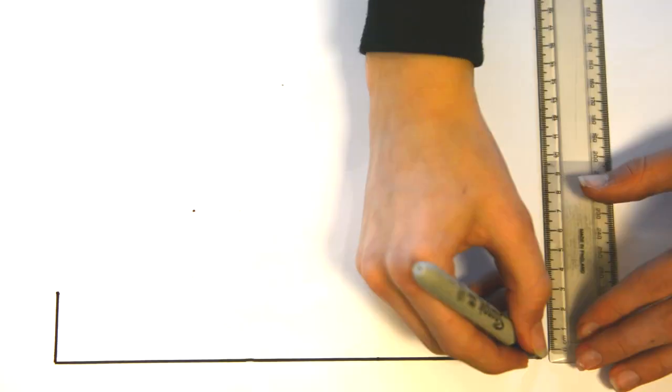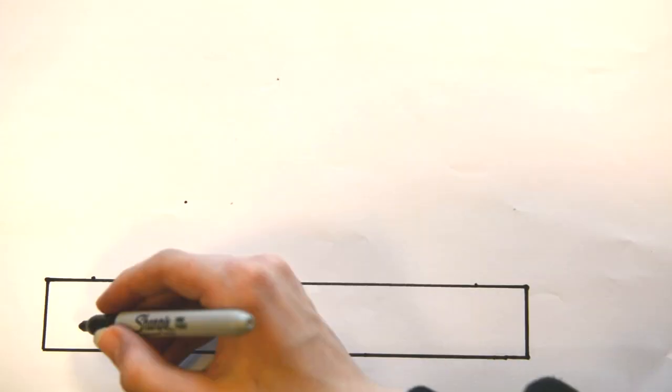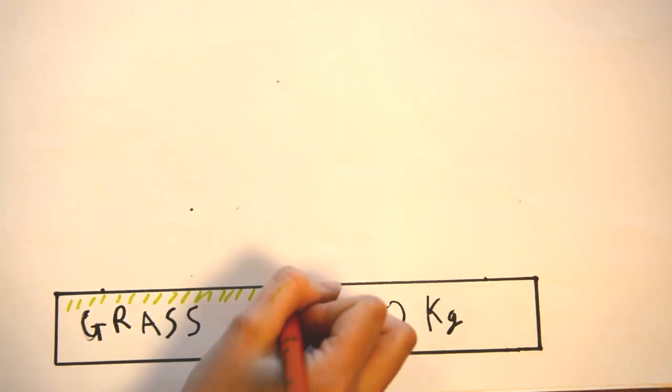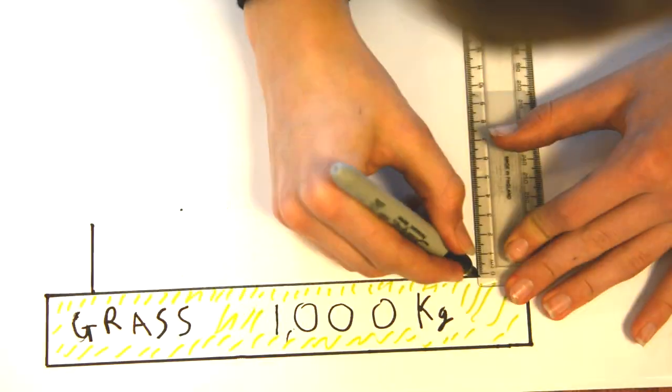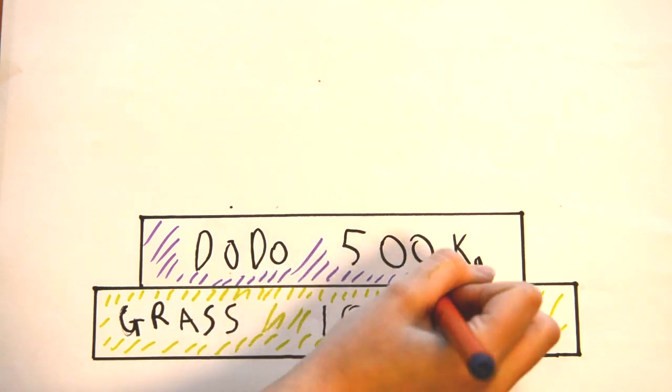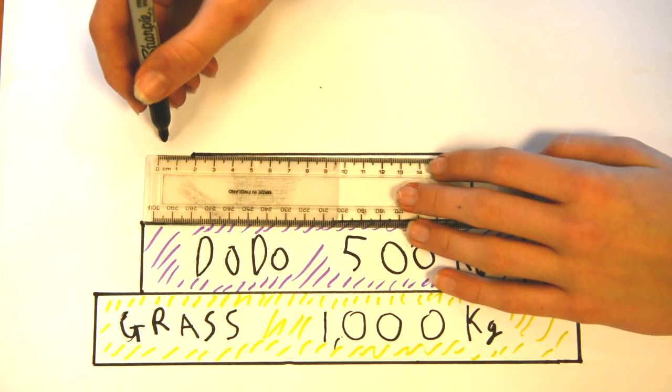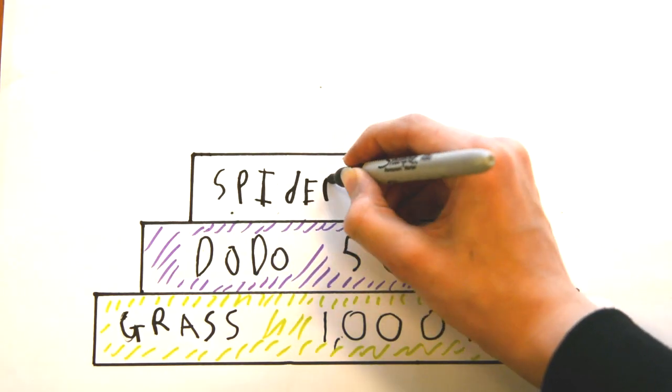We start with 1,000 kilograms of grass. That's one ton. That's eaten by 500 kilograms of dodos. Next, 400 huge spiders eat those 500 kilograms of dodo.